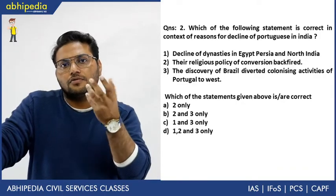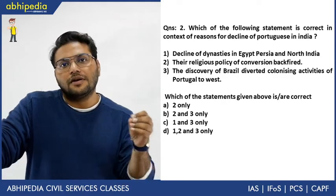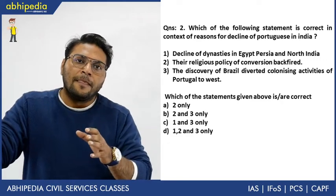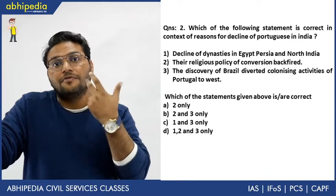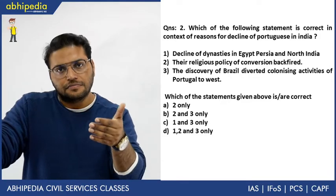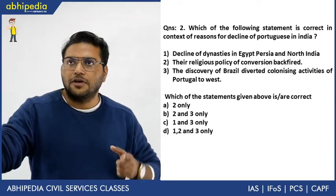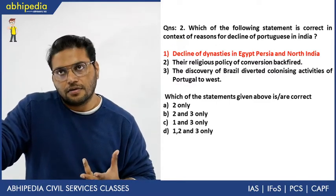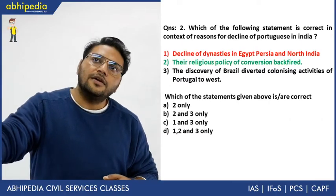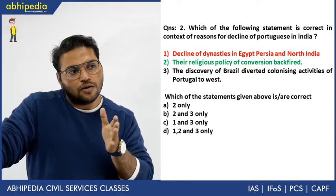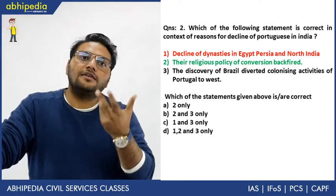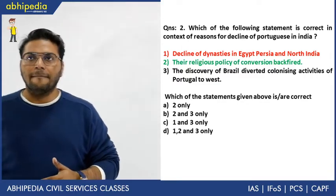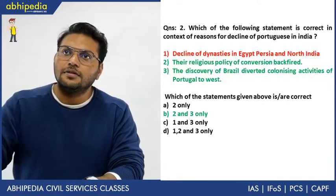Statement 1 is incorrect — there was actually an emergence, not a decline. When the Portuguese were in India, they had a religious policy of converting Hindus to Christians, which backfired. Slave trade also caused internal conflicts. So the first statement is wrong. The second statement — religious policy of conversion backfired — is correct. The third — discovery of Brazil diverted Portugal's energy westward, reducing their power in India — is also correct. Answer is two and three.